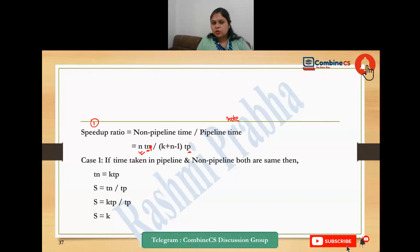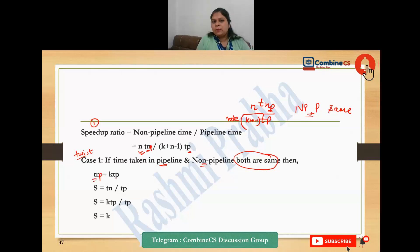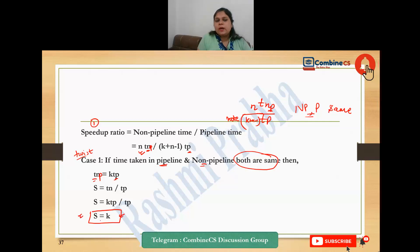Many questions twist this into: pipeline instruction and non-pipeline instruction are given with the same time. Here TP represents time taken by pipeline instruction. So if both times are the same, the TP cancels out when you derive the formula. In non-pipeline you can derive the same time case, and you will get speed-up equal to the number of phases K directly. If a different number of phases is given directly, you can get the answer.